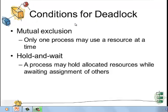Now we learn about the conditions under which deadlock occurs. The first condition is mutual exclusion, which means only one process may use a resource at a time and other processes have no idea which resource is being used by which process. The second condition is hold and wait — a process may hold allocated resources while awaiting assignment of other resources, meaning it can lock some resource it already holds while requesting another.